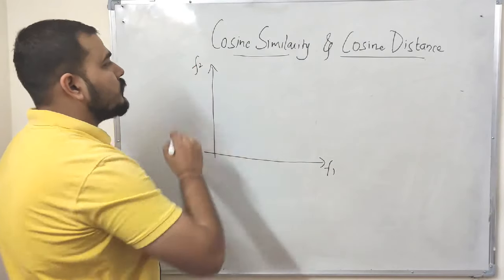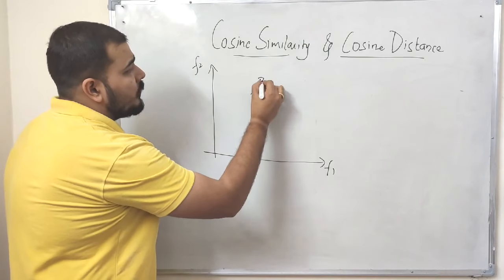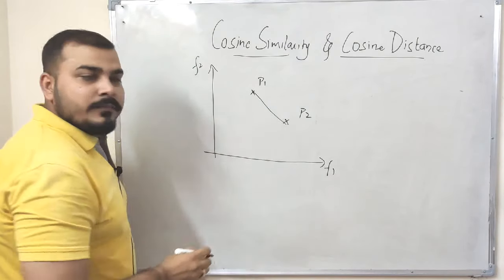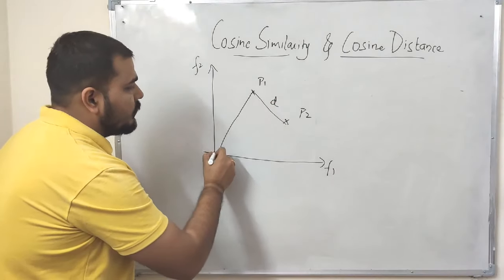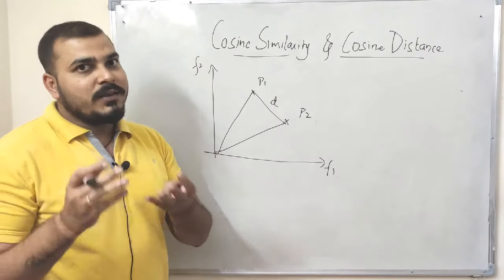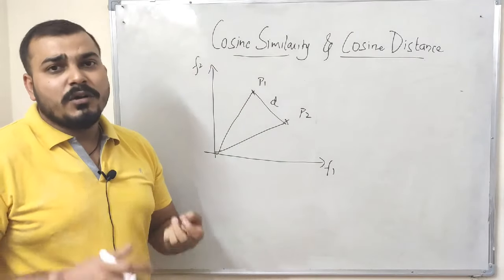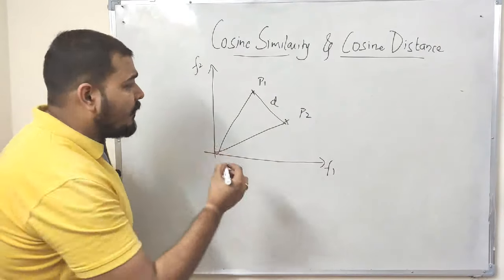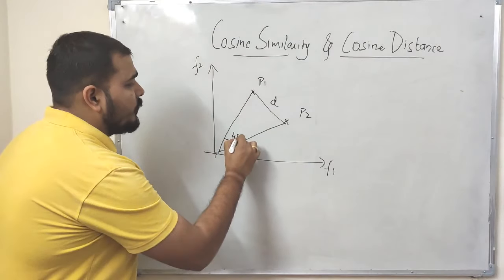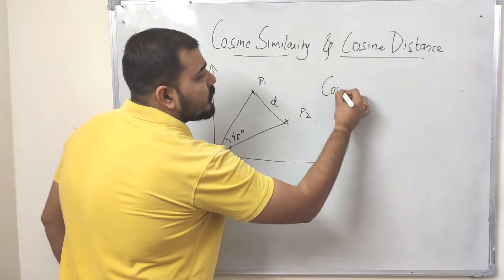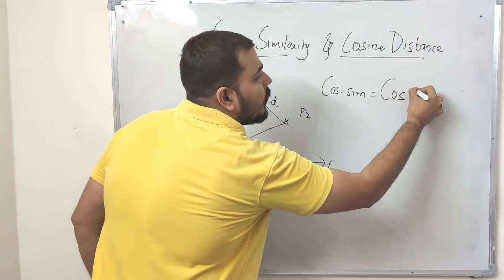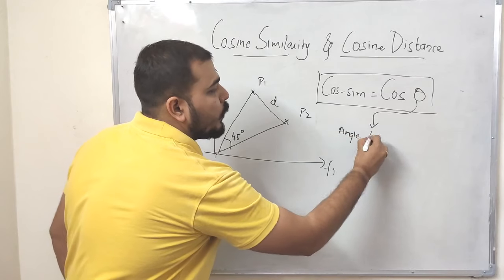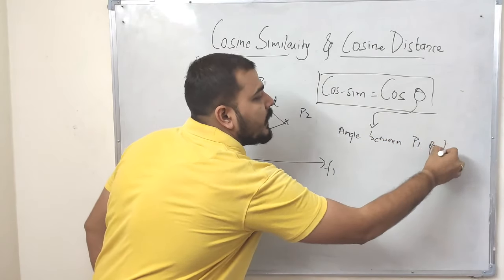Suppose I have two features F1 and F2, and two points P1 and P2. To find the Euclidean distance between them, we compute the value D using the Pythagorean theorem. But cosine similarity says that to find the similarity between these two points, we need to find the angle between them. Cosine similarity is represented as cos(theta), where theta is the angle between P1 and P2.